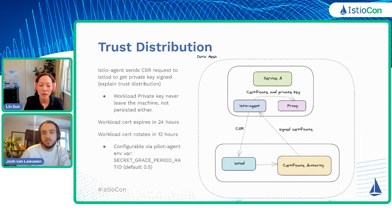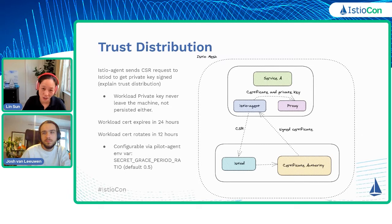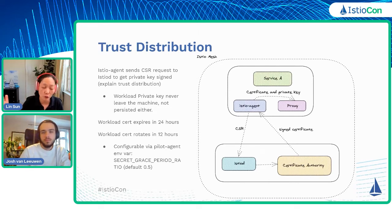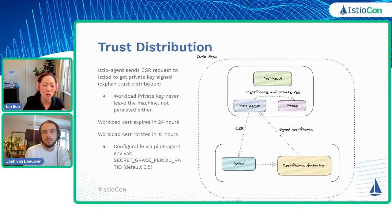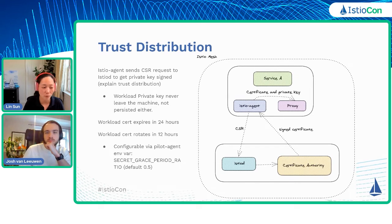By default, the workload cert expires in 24 hours. You might wonder how rotation works — we don't wait until 24 hours because the cert would expire. The workload cert typically rotates at half of the expiry time, which is 12 hours. This is configurable in Istio through the Istio agent environment variable called SECRET_GRACE_PERIOD_RATIO, and the default value is 0.5, which gives the 12-hour rotation.